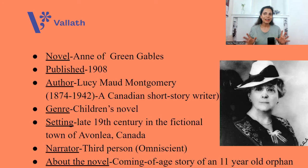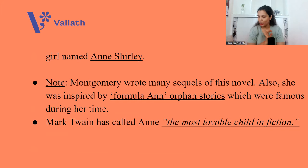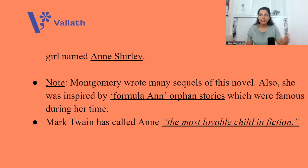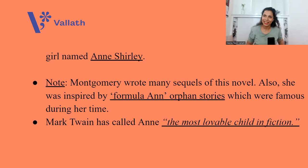Anne of Green Gables is a coming-of-age story of an 11-year-old orphan girl named Anne Shirley. Montgomery wrote many sequels of this novel. She was inspired by formula orphan stories, which were very famous during her time — stories revolving around orphan children adopted by small-town people in Canada. Mark Twain has called Anne 'the most lovable child in fiction.'